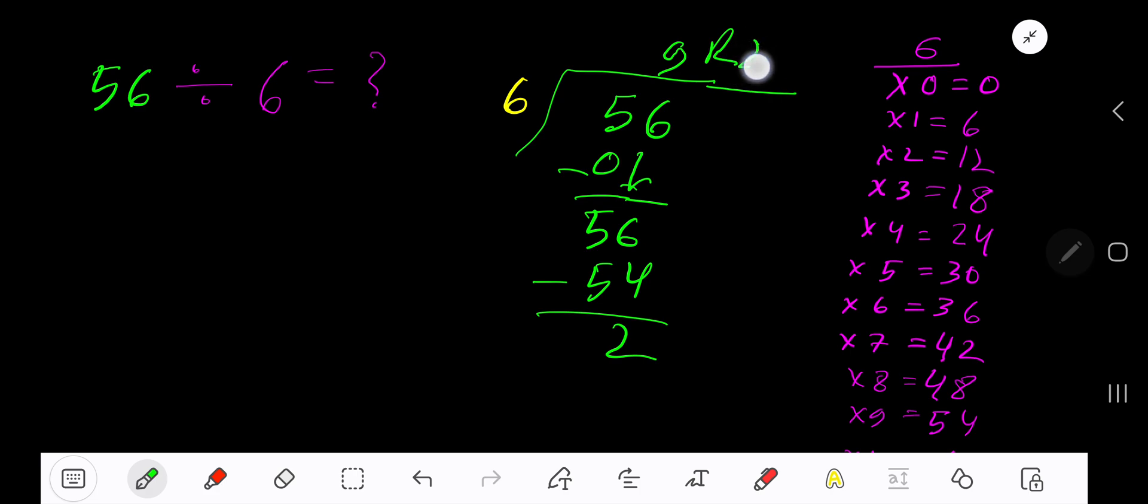If you want to write your answer in decimal form, then take your decimal and add number of zeros according to your need. Bring down the first zero. Before the zero there is a decimal; the decimal must come to the quotient directly. 6 goes into 20 how many times? 4 times is 24 which is greater.